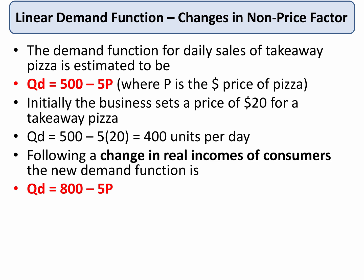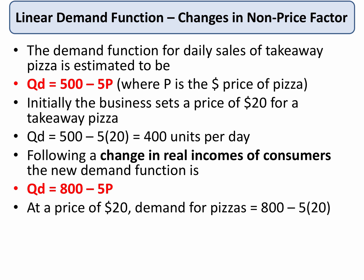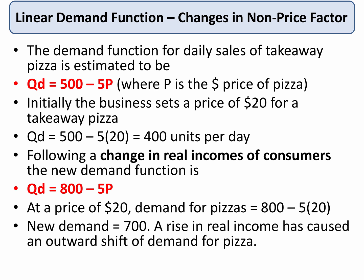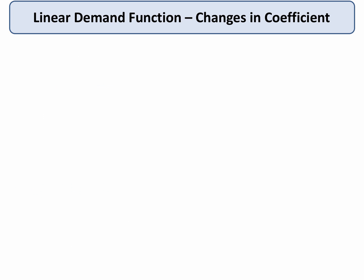People have more real income, so effectively their budget line has shifted out and they can now afford to buy more. This causes a shift in demand. At $20 — keeping the price constant — demand is now 800 minus 5 times 20, which equals 700. In other words, a big rise in income has caused an outward shift in the market demand for pizza.